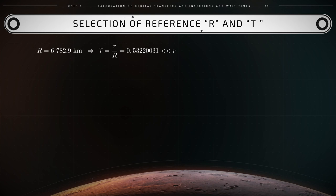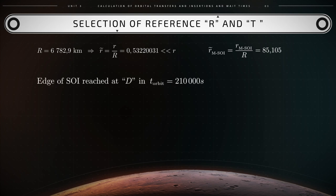The corresponding non-dimensional radius of Mars's sphere of influence is then calculated as rm_soi_tilde equals dimensional rm_soi over the reference length R, which equals 85,105. Hence, when the computed r̃ reaches this magnitude, the spacecraft will have reached the edge of Mars's sphere of influence. The corresponding dimensional time is found to be 2.431 Earth days, that is 210,000 seconds.